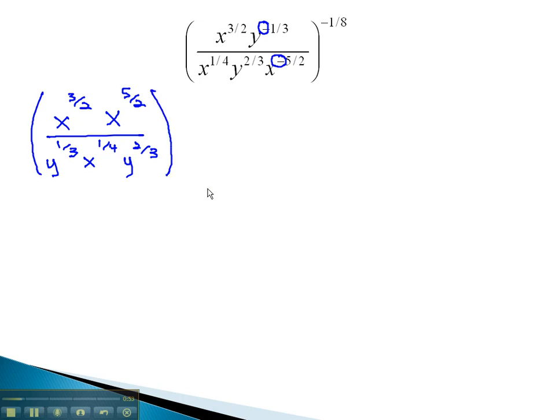Let's continue working inside the parentheses before we worry about the negative 1-eighth outside of the parentheses. We'll want to simplify the numerator by combining the x's into one single x. Again, we might want some chicken scratch to help us do that.